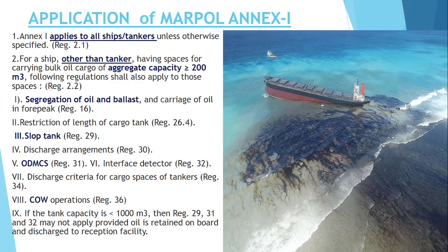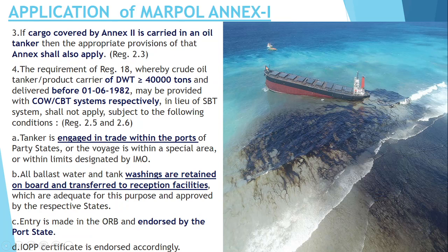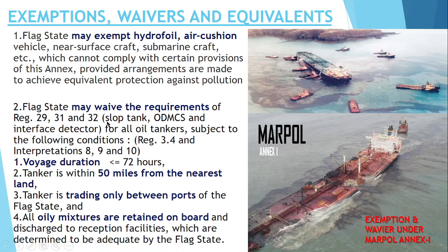So to summarize where MARPOL Annex 1 applies: it applies to oil ships and tankers, to ships with aggregate cargo capacity greater than 200 cubic meters, to Annex 2 cargo if carried in an oil tanker, and to ships constructed before 1982 with DWT greater than 40,000 tons. Now let's look at the exemptions and waivers. The flag state may exempt hydrofoil-type ships, air cushion vessels, near-surface craft, submarine craft, etc. which cannot comply with certain provisions of this annex.